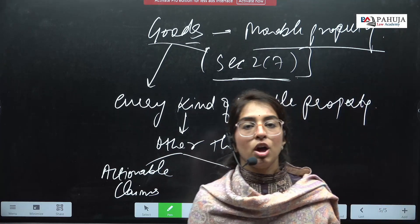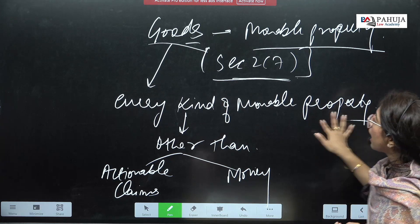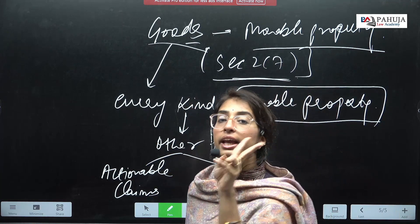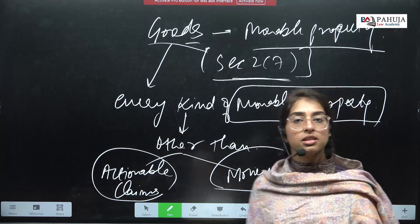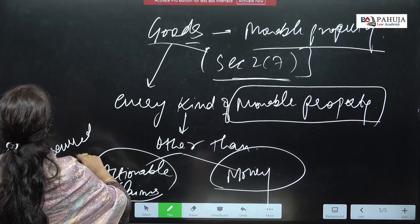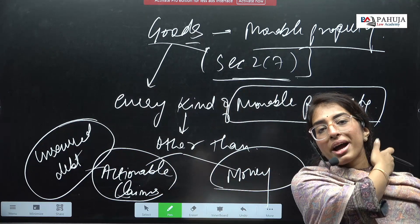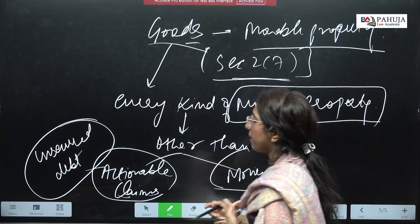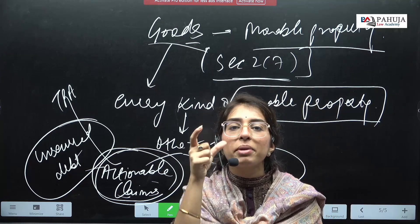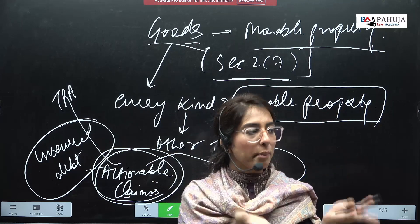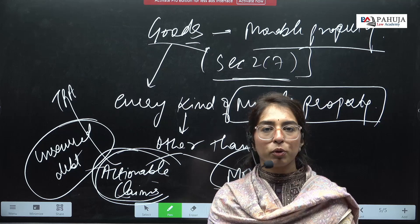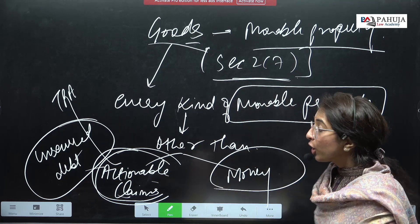So SOGA says: goods are every kind of movable property — all movable property is included — except two things: first is actionable claims and second is money. Actionable claims are unsecured debt, which we study in TPA. An actionable claim is not really a movable property — it is a claim towards your unsecured debt, you cannot move it from one place to another. So actionable claims are not goods. The question arises on money.